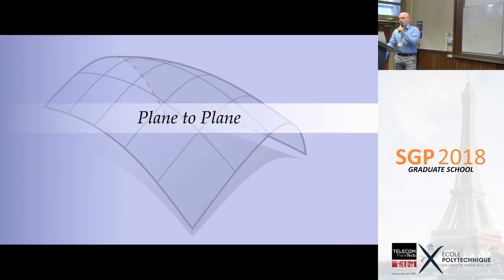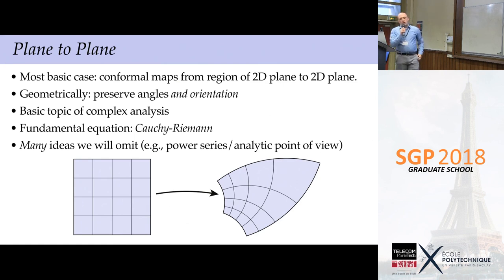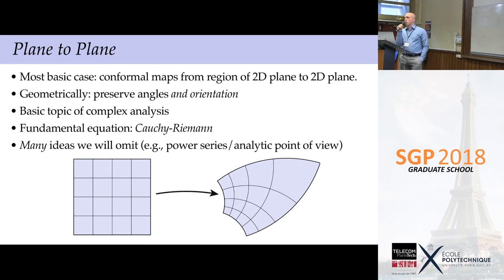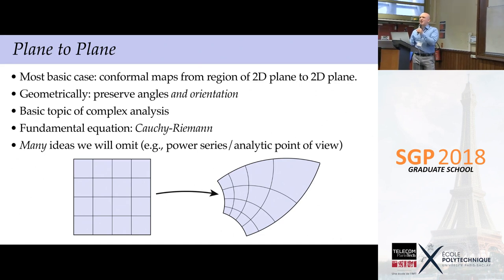Let's talk about conformal mappings from the plane to the plane. The basic geometric idea is maps that preserve angles and orientation. If you've taken a class on complex analysis, you know the fundamental equation for conformal maps in the plane is the Cauchy-Riemann equation. I can't do a whole class on complex analysis here, but the key insight: go back to basic intro textbooks and try to link them to computational and algorithmic thinking — you'll be amazed how much you find.